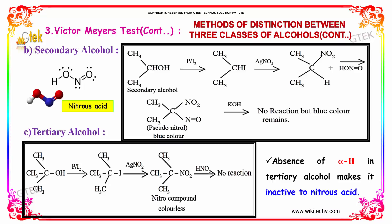This is a distinction test for the three types of alcohols. For the primary alcohol we get a red color. For secondary alcohol we get a blue color. For the tertiary alcohol there is no reaction which occurs. Victor Meyer's test is thus a test to distinguish primary, secondary, and tertiary alcohols based on color. The absence of alpha hydrogen in the tertiary alcohol makes it inactive to nitrous acid.